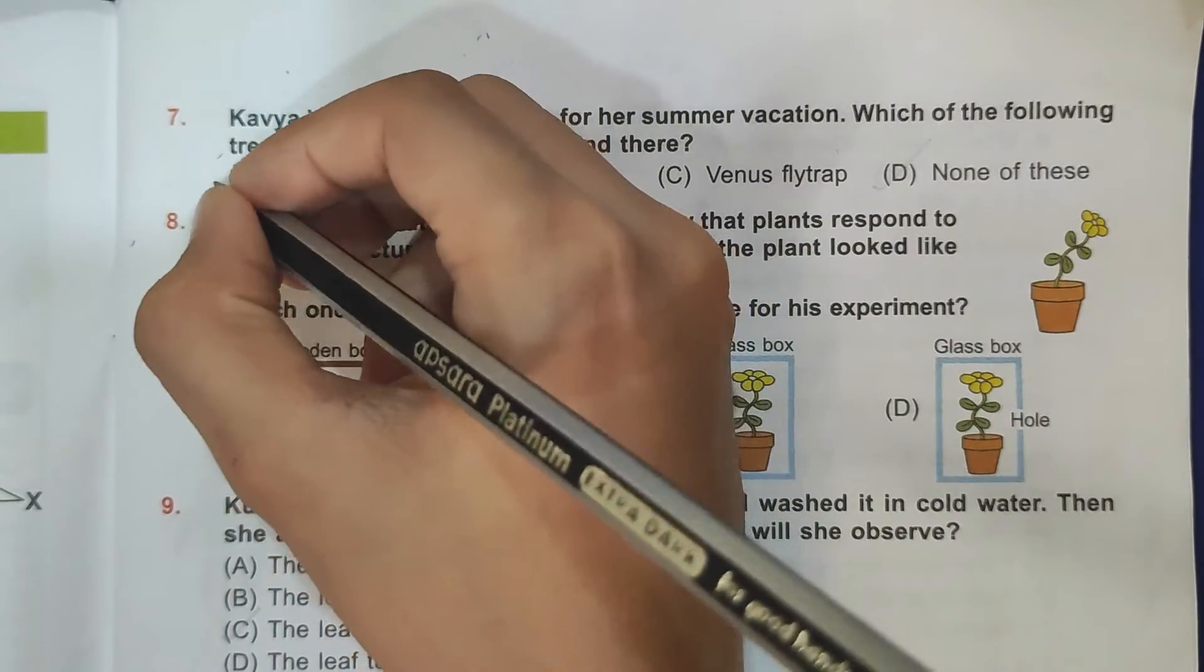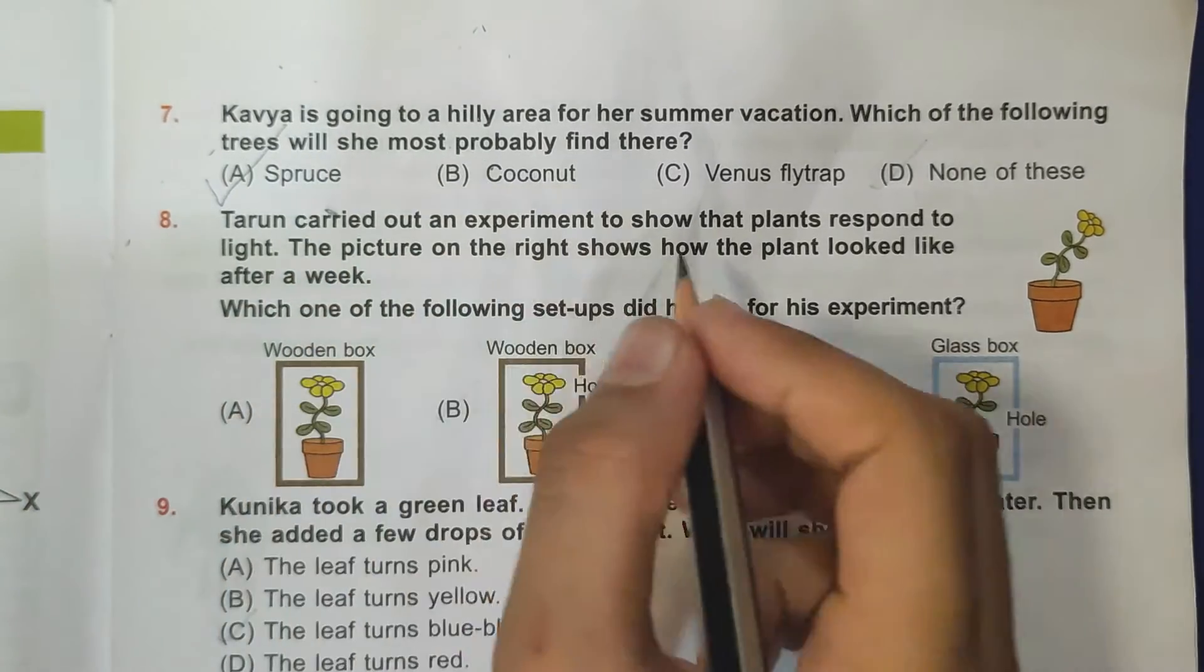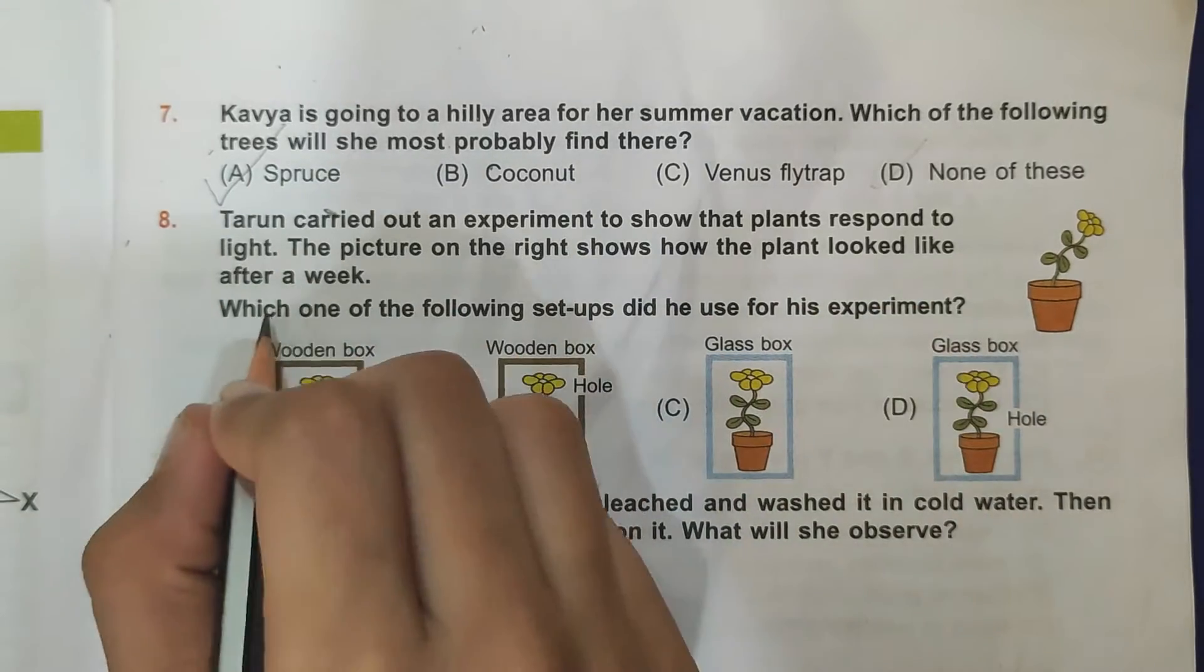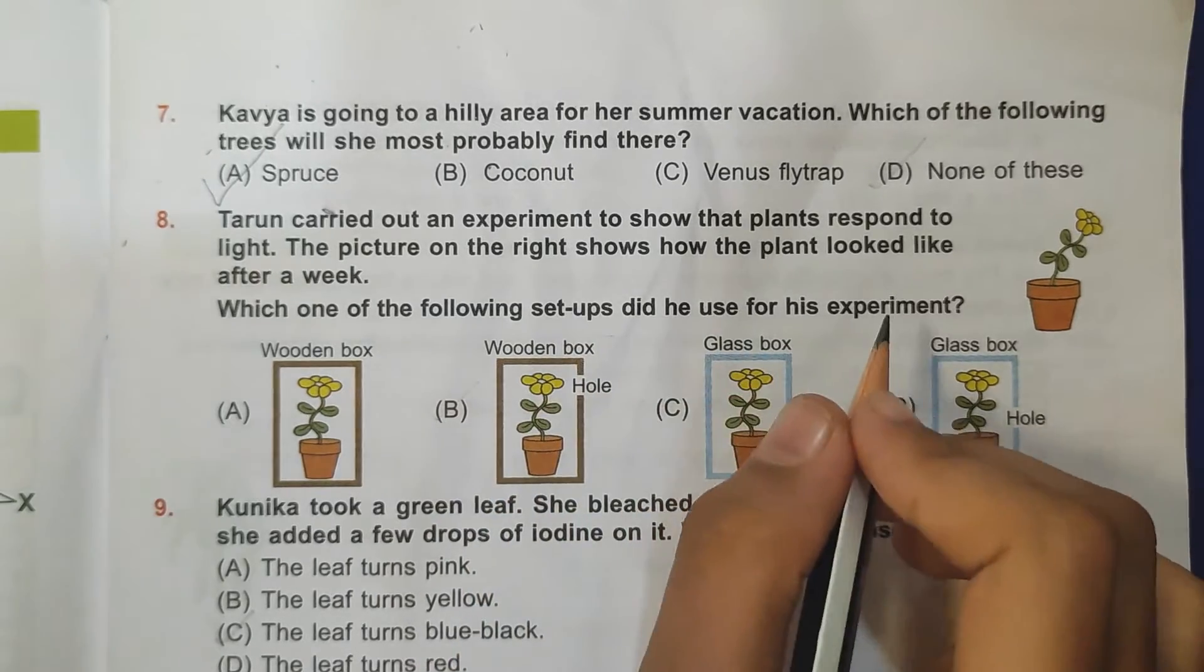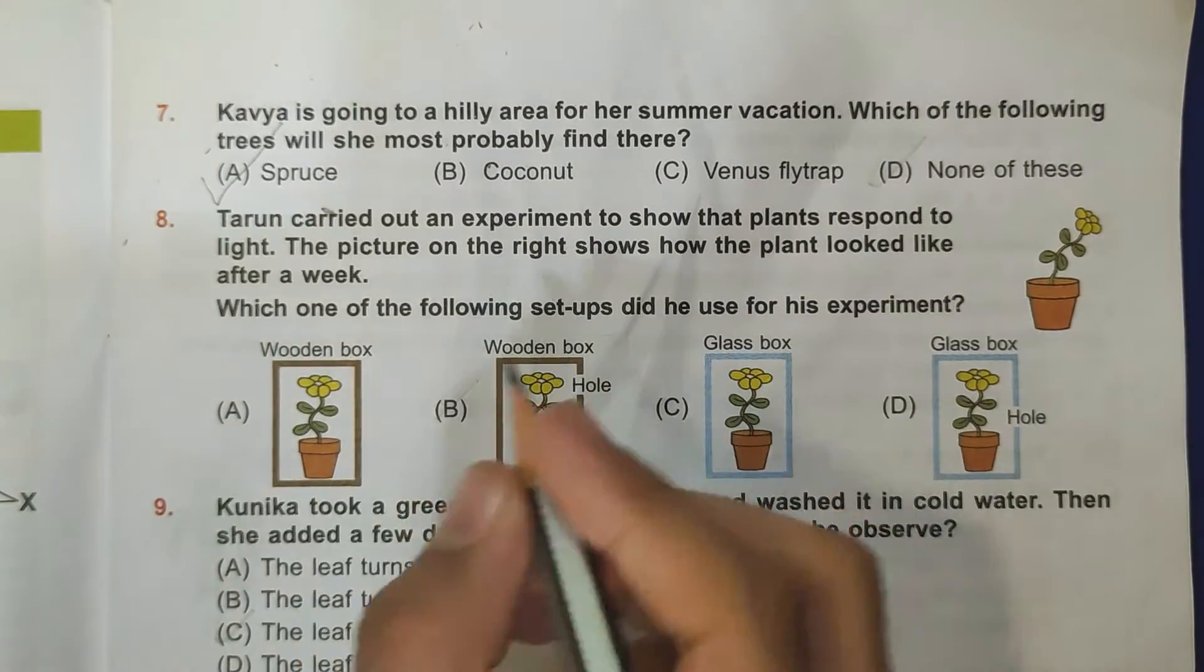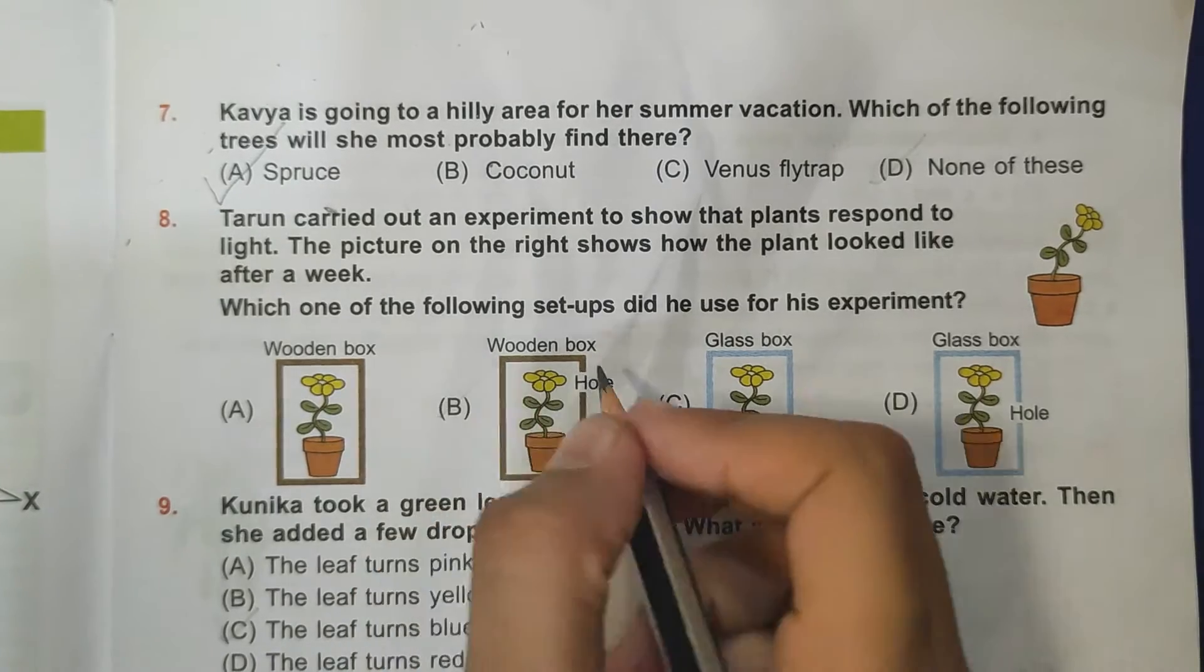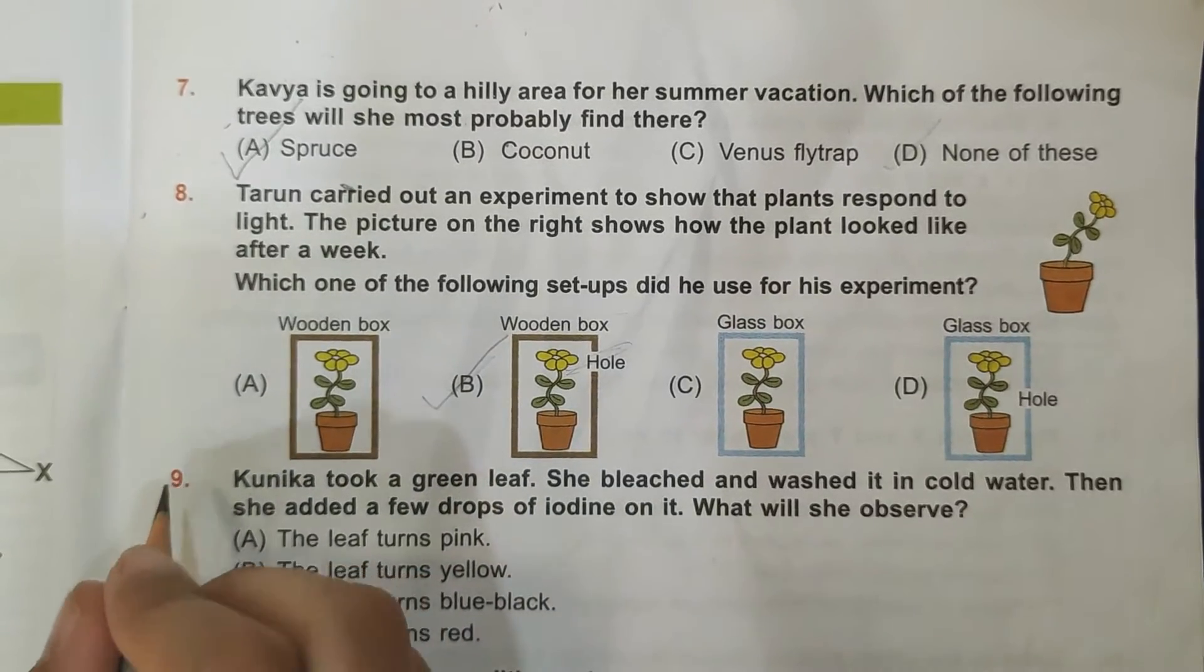Eighth question: Tarun carried out an experiment to show that plants respond to light. The picture on the right shows how the plant looks like after a week. Which one of the following setups did he use for his experiment? It is going that side and here is a full wooden box so it will not go for any side. Here is a wooden box and a hole, so it will go that side. So B is the correct answer.